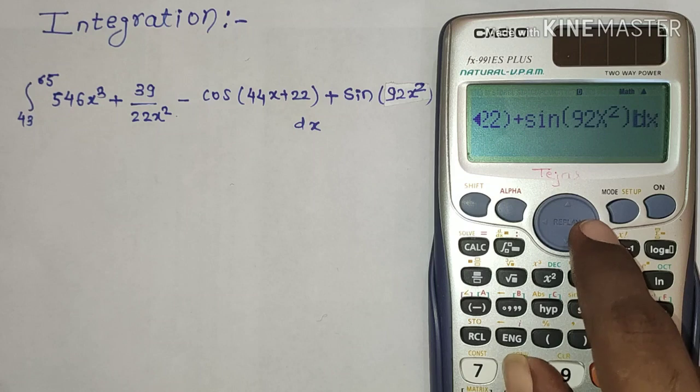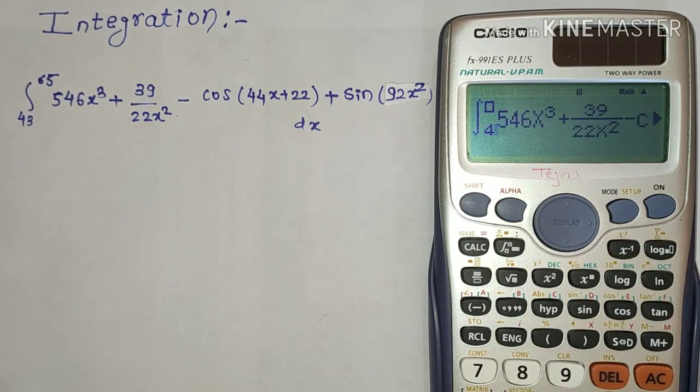Now let's put the limit. So press the next button. Now lower limit is 43. Now again press the next button. So upper limit is 65.